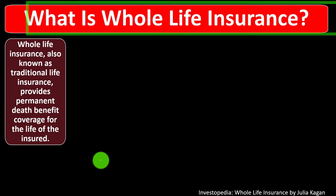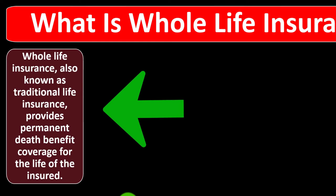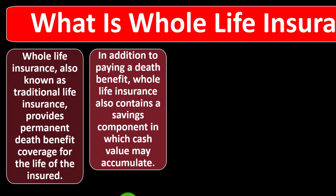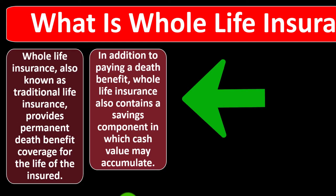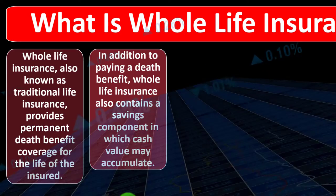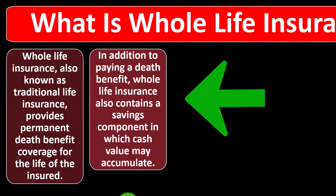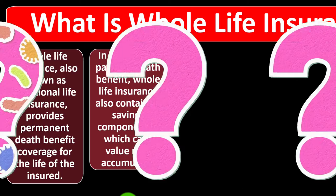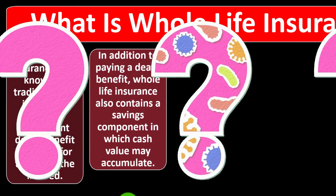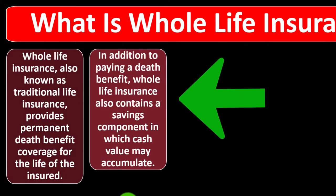So what is whole life insurance? Whole life insurance, also known as traditional life insurance, provides permanent death benefit coverage for the life of the insured. In addition to paying a death benefit, whole life insurance also contains a savings component in which cash value may accumulate. You could think of it like an investment component, which you want to be comparing to pure life insurance — asking why not just buy the pure life insurance, which is cheaper, and invest the difference in a savings account or IRA.